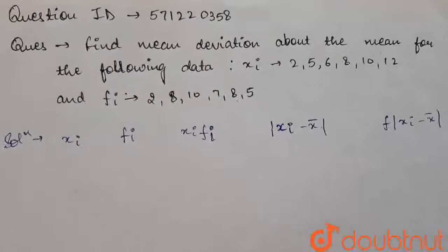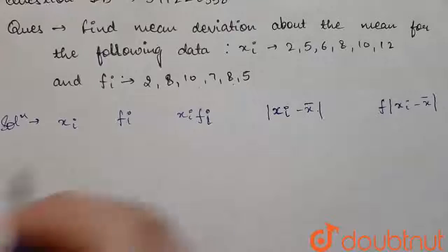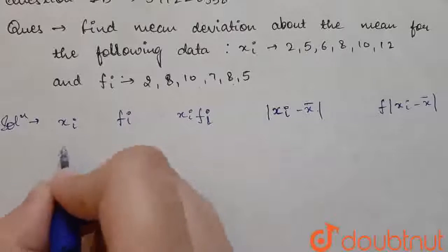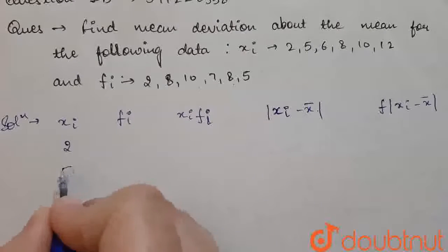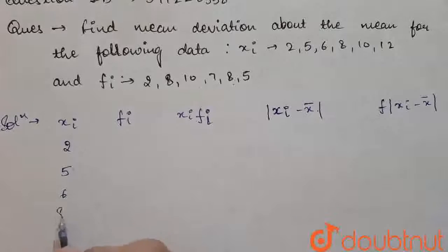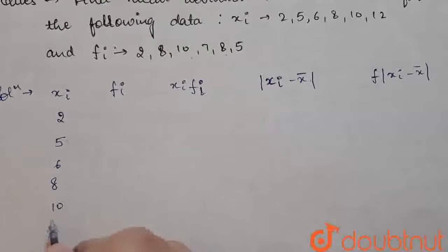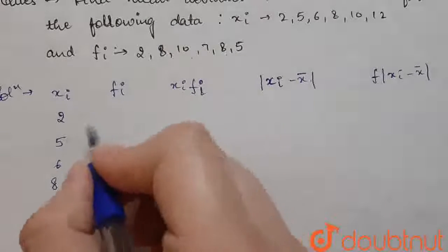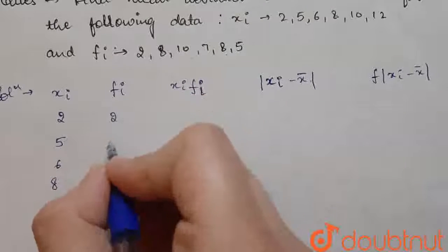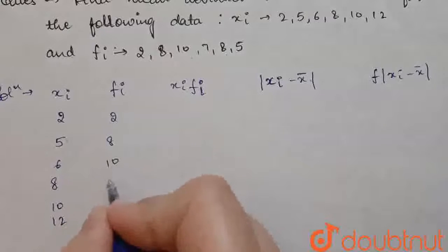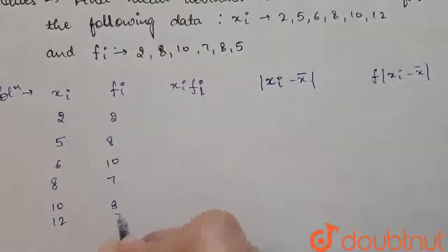So, what we are going to do? The xi is given 2, 5, 6, 8, 10 and 12. Fi corresponding to this are given 2, 8, 10, 7, 8, 5.